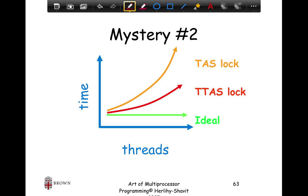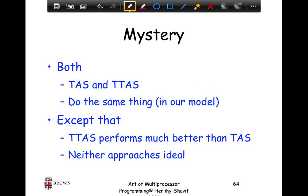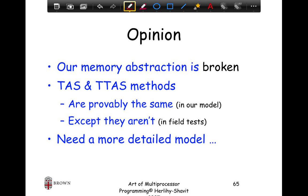If you look at the behavior of test-and-test-and-set — you can try this at home — its behavior is better. On the y-axis is time, so lower is better. You're still not as good as the ideal flat line, but you have less overhead than test-and-set: as more threads are added, execution time increases at a much lower rate. The mystery is that both test-and-set and test-and-test-and-set do the same thing in our ideal software model, yet test-and-test-and-set performs and scales better.